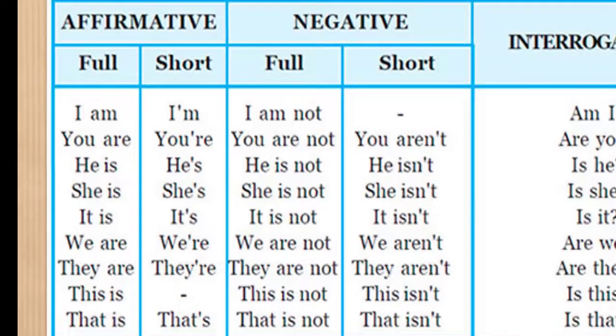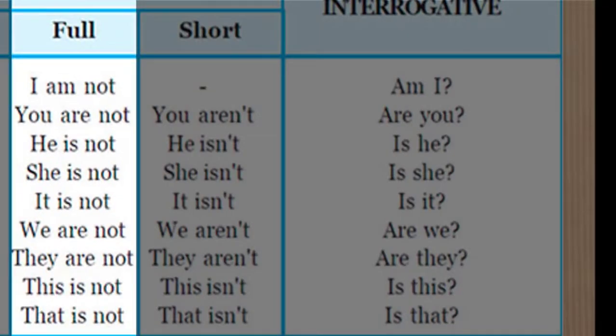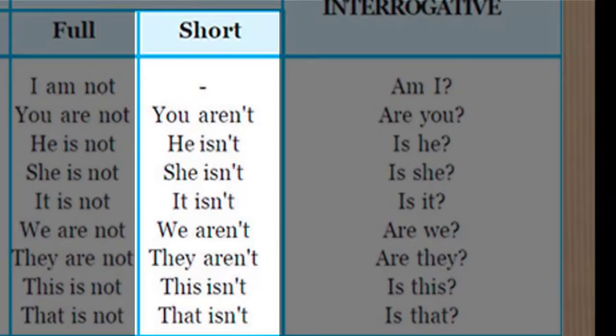In the negative form, full form: I am not, you are not, he is not, she is not, it is not, we are not, they are not, this is not and that is not. In the short form: you aren't, he isn't, she isn't, it isn't, we aren't, they aren't, this isn't, that isn't.